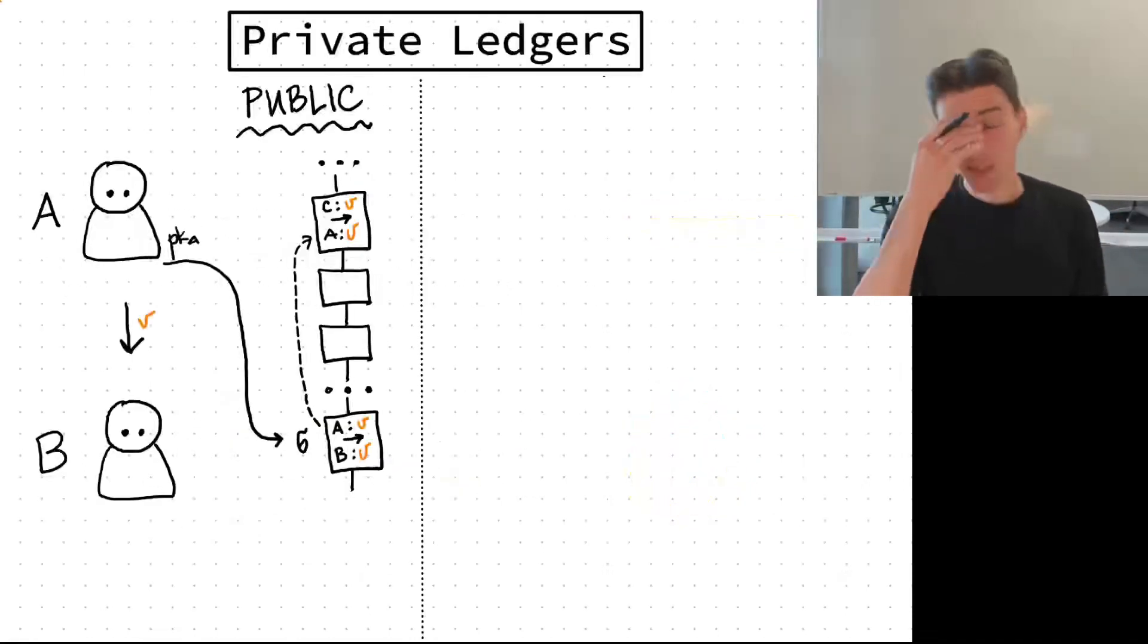So we start from a very basic separation between public and private ledgers. In the public world you usually have transactions that send money in clear, and if party A sends something to B it needs to reference the previous transaction that sent money to A from C, and then there's a signature to prove that it authorizes this spend.